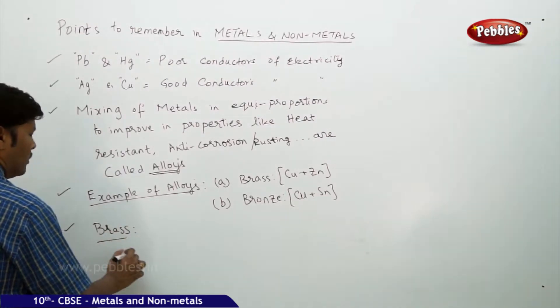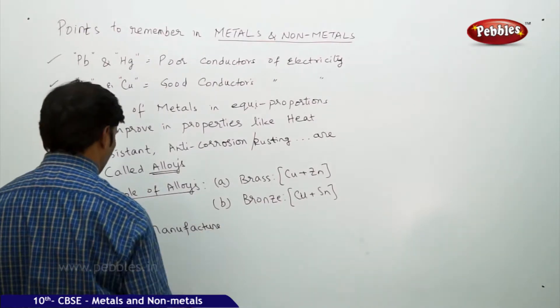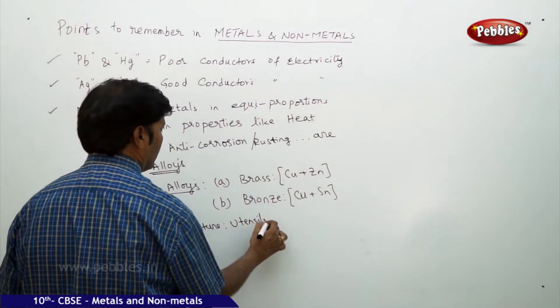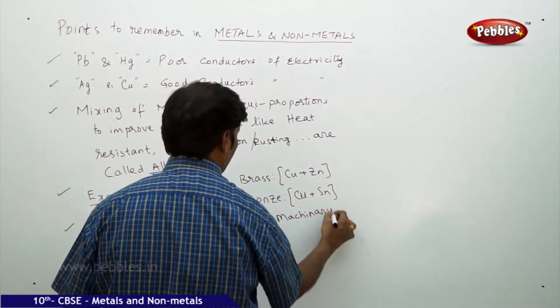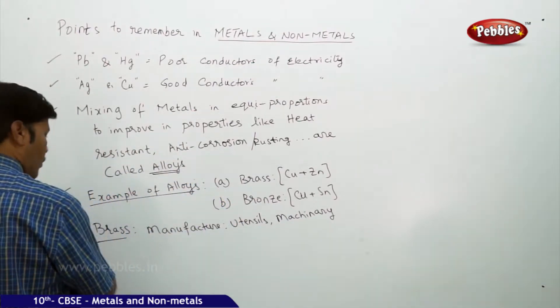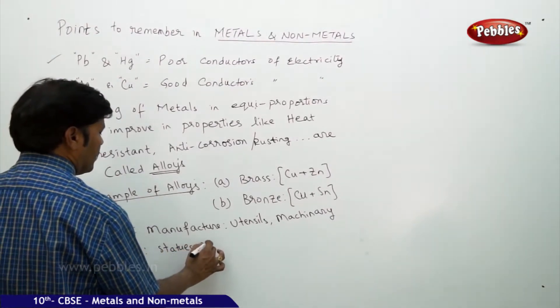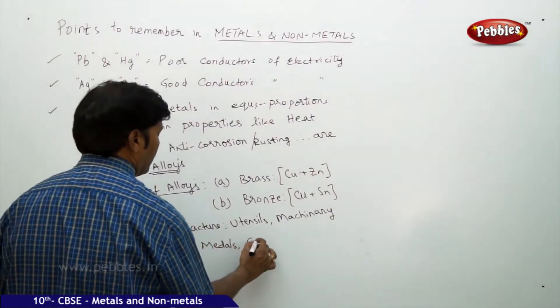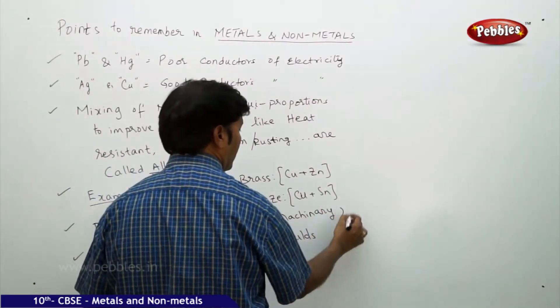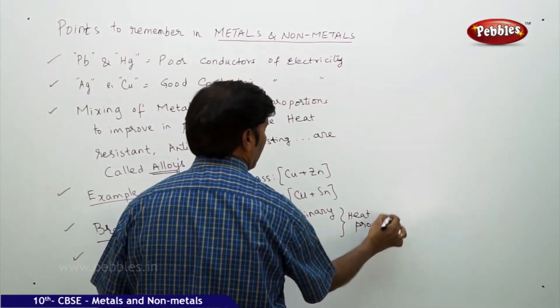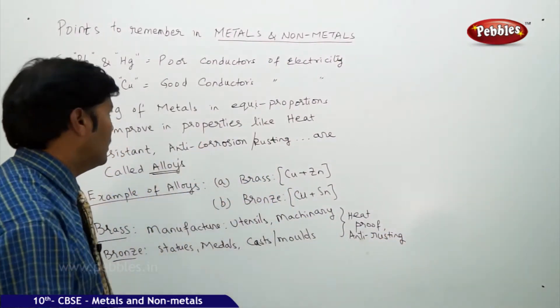Brass is used in the manufacture of utensils, machinery, and so on. Bronze is used for statues, molds, and casts. Both these are heat proof and anti-rusting. They are long-lasting.